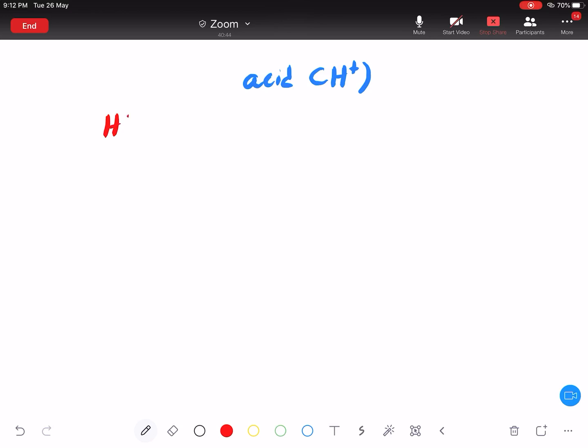Saya ada HNO3. Saya dissolve dia dalam air. Saya larutkan lah dia dalam air. Okay. Apa jawapan dia? Jawapan dia adalah H plus, plus NO3 minus. Ini adalah acid nitric. Nitric acid.